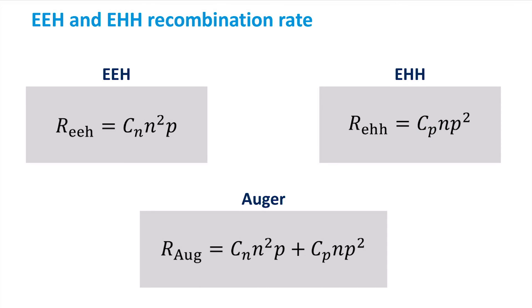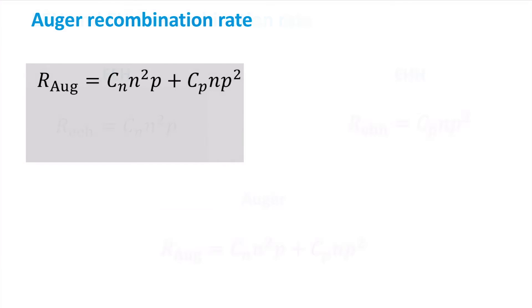By combining both processes, the recombination rate of Auger recombination is obtained. We will now simplify the recombination rate for N and P-type materials.